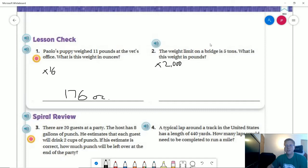And then the weight limit on a bridge is 5 tons. What is this weight in pounds? Multiply by 2,000. That would give us 10,000 pounds.